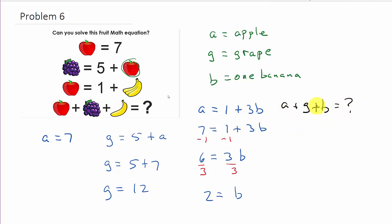so if we plug everything in, well, A is 7, plus G, which is 12, okay, plus B, which is 2.